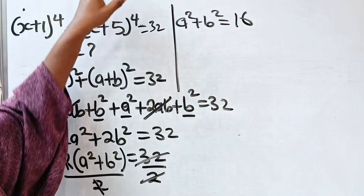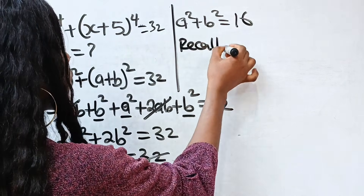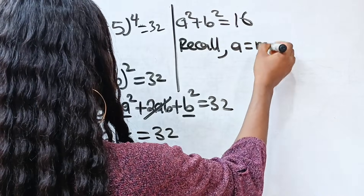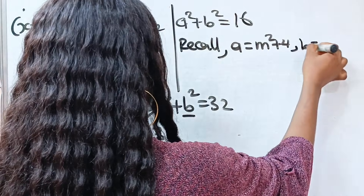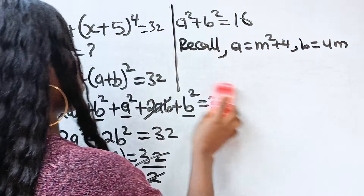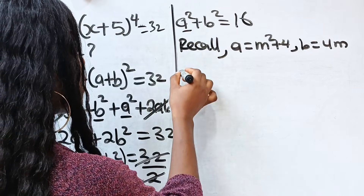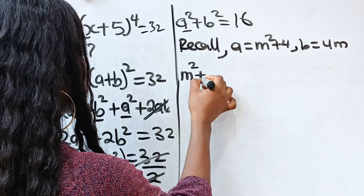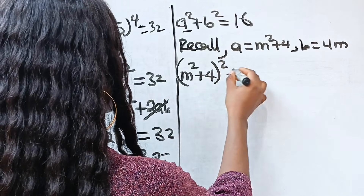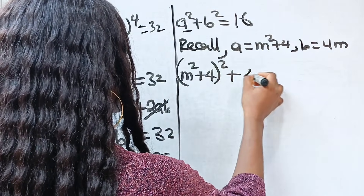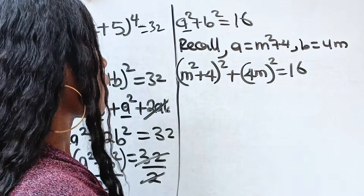Recall that a equals m squared plus 4 and b equals 4m. So substituting back, we have (m squared plus 4) all squared plus (4m) squared equals 16.